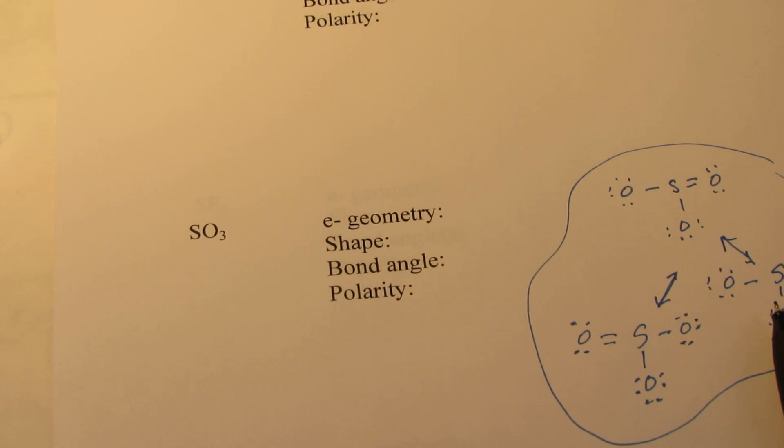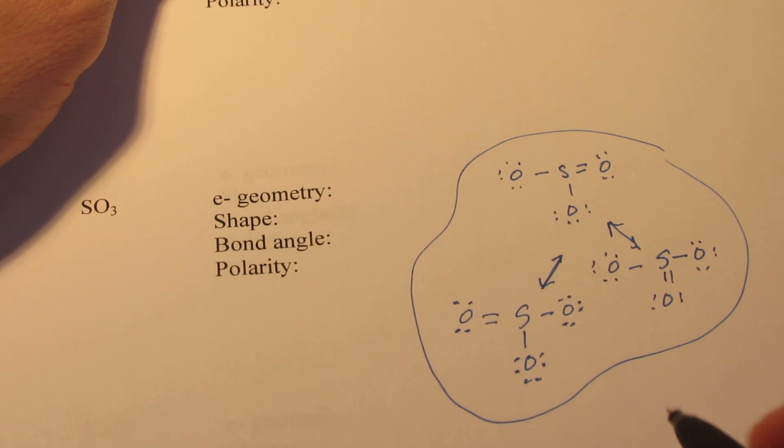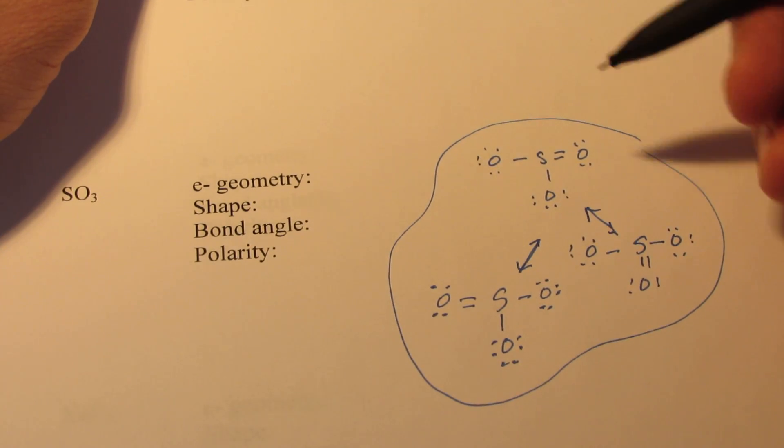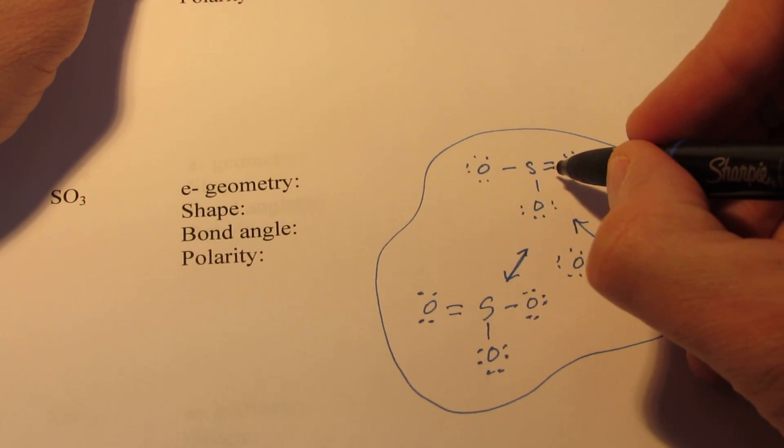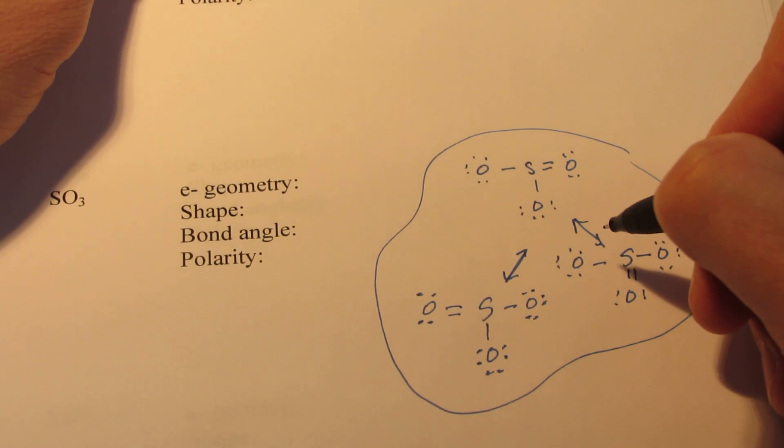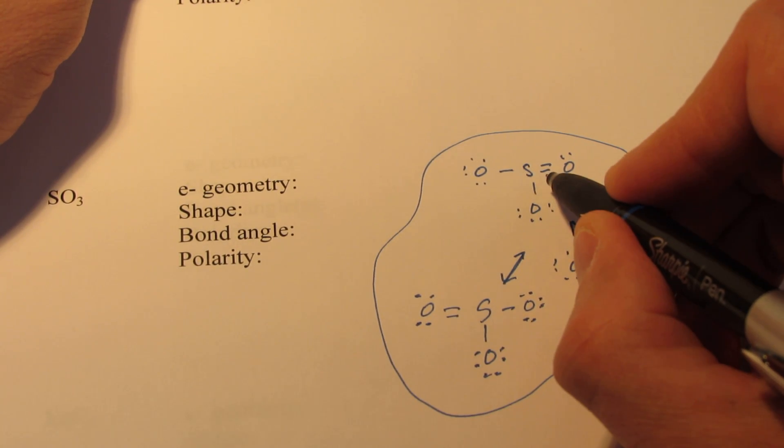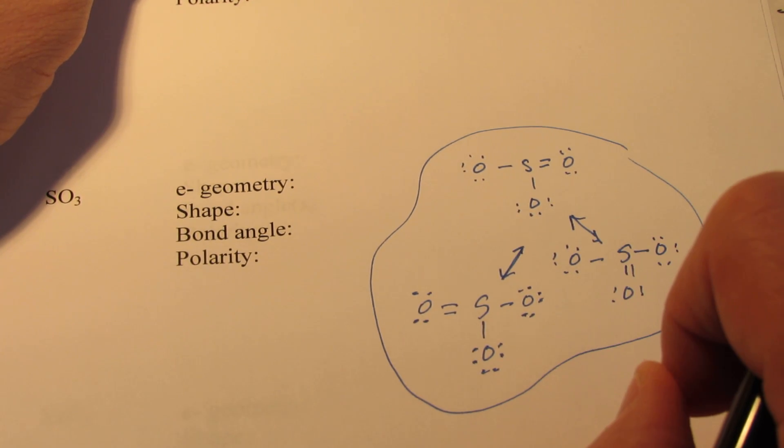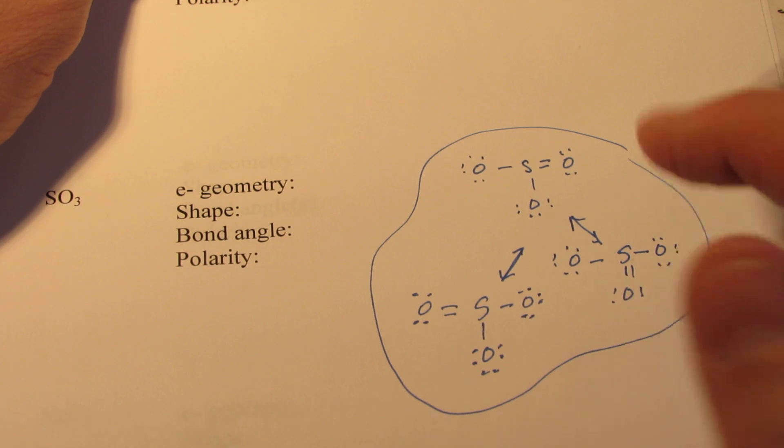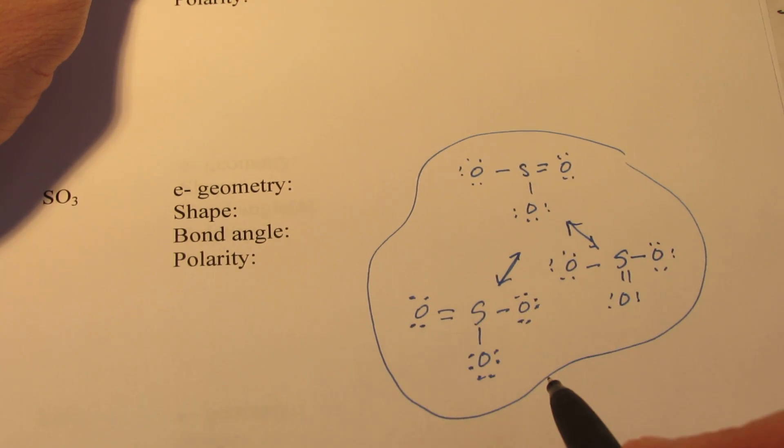All right, let's try to wrap up our Lewis structure review here. We had just finished part two talking about sulfur trioxide and its Lewis structure, sort of an unusual thing because we had what appeared to be one double and two single bonds. In reality, that second bond here is shared in all three positions, so it turns out to be each sulfur to oxygen is one bond plus a third of another bond.